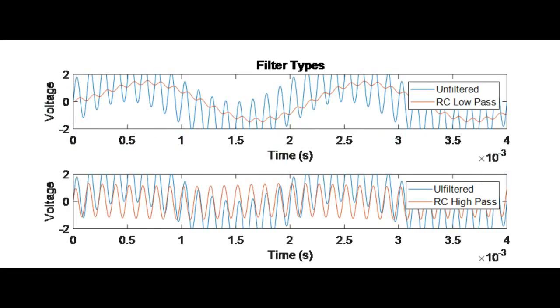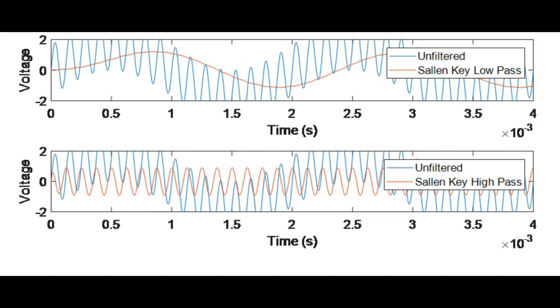This signal would then be sent through four different filters. A high-pass and a low-pass RC filter would act as first-order filters, and then a high-pass and low-pass Salen Key filter would act as second-order filters.